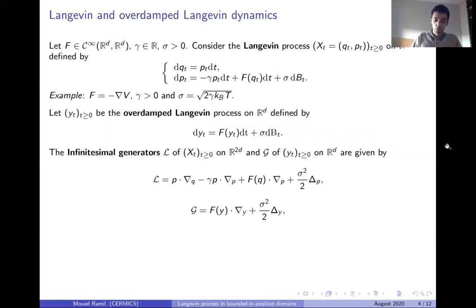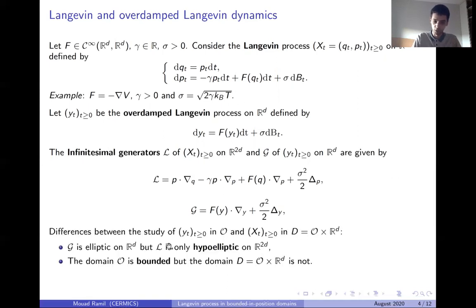Our goal is to extend the knowledge that we have on the overdamped Langevin process on smooth bounded domains to the Langevin process when we consider a bounded domain only in the position coordinates. The main difference is that we consider here a Fokker-Planck operator L which is hypo-elliptic and not elliptic, and the domain D is not bounded, only bounded in the first coordinates.